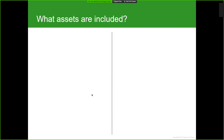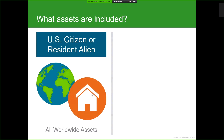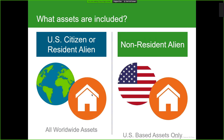Once we determine the residency status of both spouses, the next question is what assets are actually included in the estate. For a US citizen or a resident alien, estate and gift tax planning is based on all worldwide assets. For a non-resident alien, we're looking only at those based in the US. US-based assets include all tangible property and real estate located in the US — stocks, bonds, artwork, anything tangible. However, life insurance is not considered US property for estate tax planning purposes for non-resident aliens.